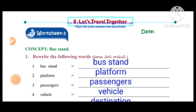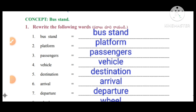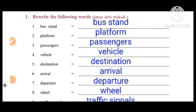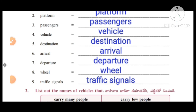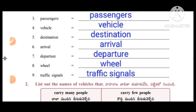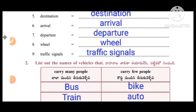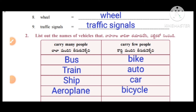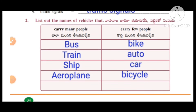Worksheet number 3, concept: bus stand. Rewrite the following words. First one: bus stand, platform, passengers, vehicle, destination, arrival, departure, wheel, traffic signals. List out the names of vehicles that carry many people.